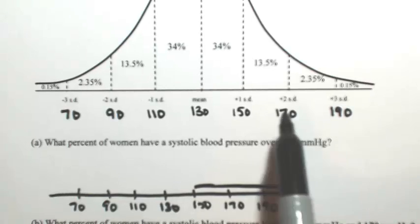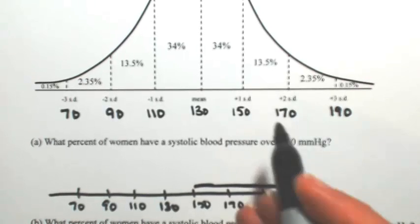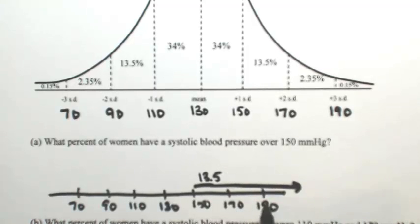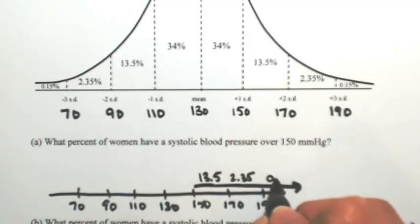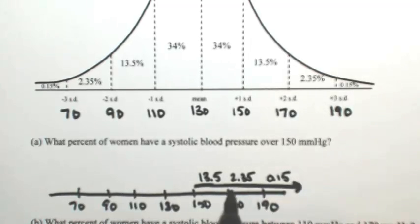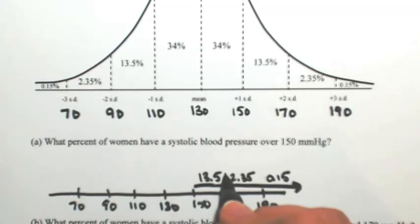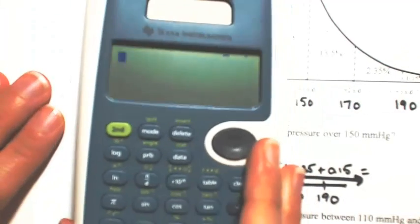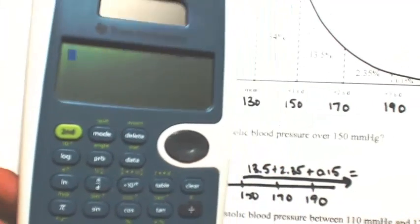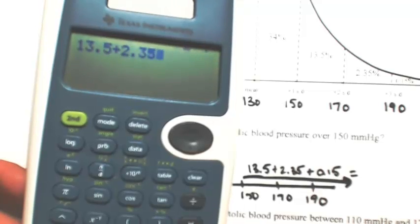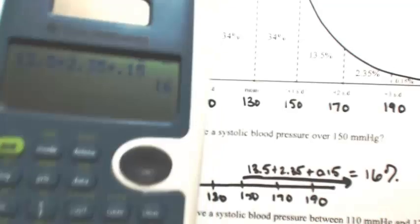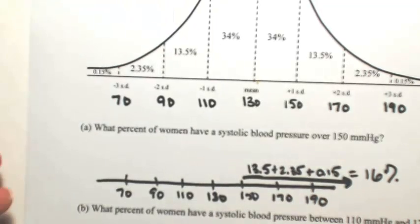So looking at the picture, let's figure out what all of this is. Between 150 and 170 is 13.5%, between 170 and 190 is 2.35%, and after 190 is 0.15%. So to figure out the whole percentage, we're just going to add all this together. So 13.5 plus 2.35 plus 0.15, so 16% of women have a systolic blood pressure over 150.